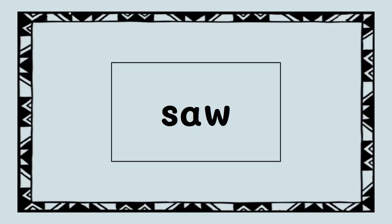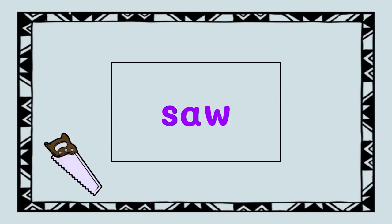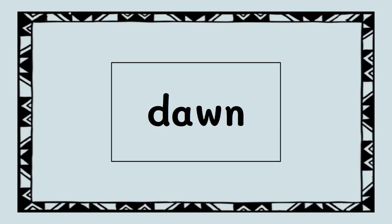Here's the first word. Remember, we know that AW can say AW. Let's say the sounds for this word. Ready? S-AW. S-AW. Here's the next word. We see AW again.